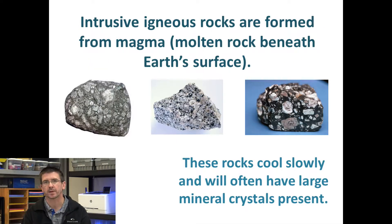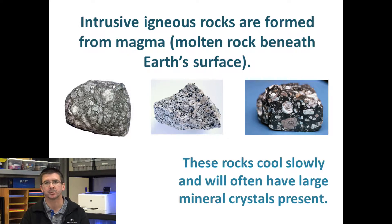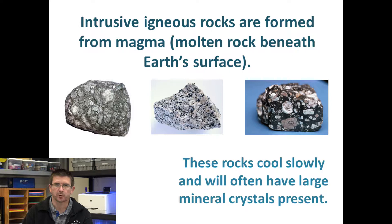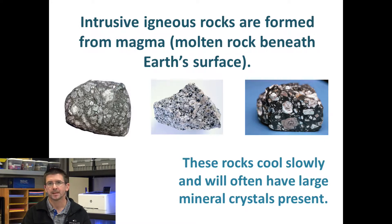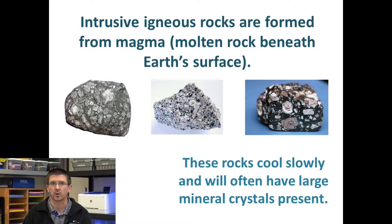There are actually two different classifications of igneous rocks. We can classify igneous rocks based on where they cool, where they form, and what they form from. The first classification is called intrusive igneous rocks. These are igneous rocks that are formed beneath the surface of the Earth — the molten rock never reaches the surface and actually cools inside Earth's crust. Any time there's molten rock beneath Earth's surface, we call that magma.